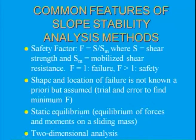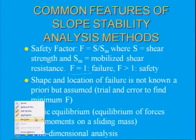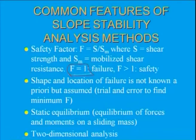For common features of slope stability analysis, the factor of safety F equals S divided by SM, where S is shear strength and SM is mobilized shear resistance. If F equals 1, the slope has failed. The factor of safety must be greater than 1 for stability — this is the basic requirement.